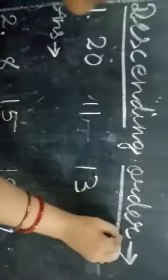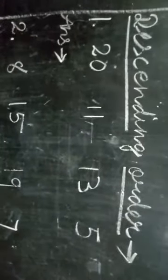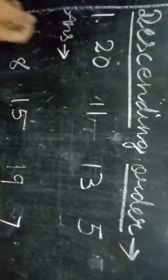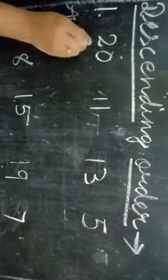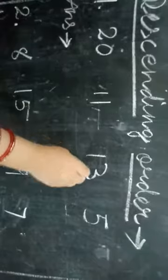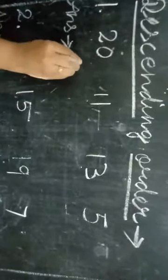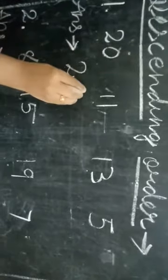So right now, let us see some descending order example. Just opposite, we are going from biggest to smallest. So which is the biggest number? 20, 11, 30 and 5. Look at here. Which is the biggest number? The biggest number is 30.